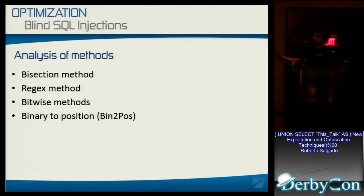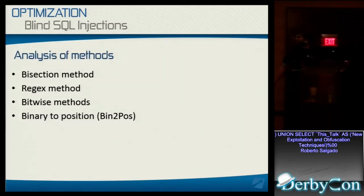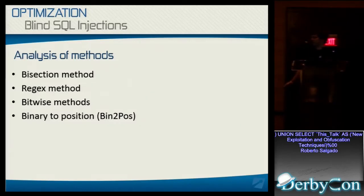So talking about the blind SQL injection methods we can use, we can start with the bisection method. It's nothing new, but it's important to mention it when comparing it to the other methods. The bisection method is kind of the standard — everything uses it. It's pretty easy to implement. Then we'll talk about some regular expression methods, bitwise operator methods, and then my own method that I came up with: the binary two-position method.